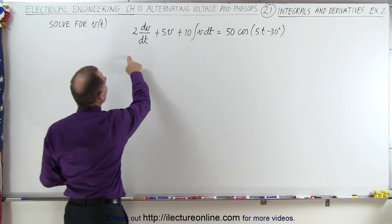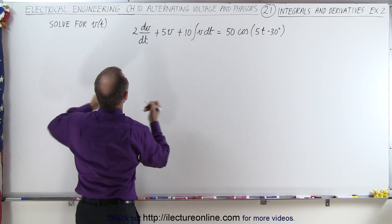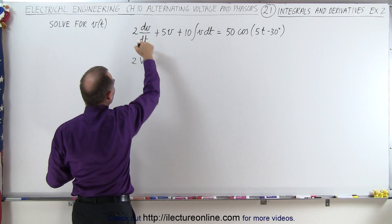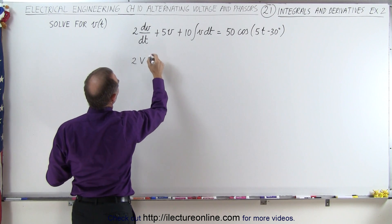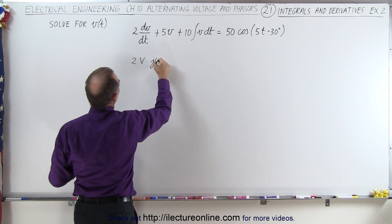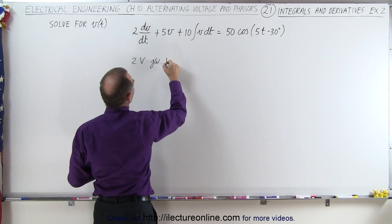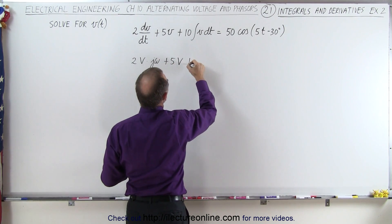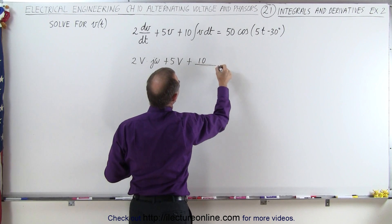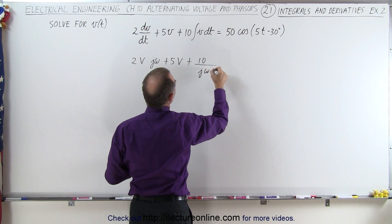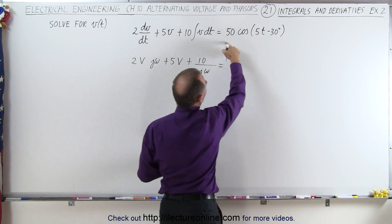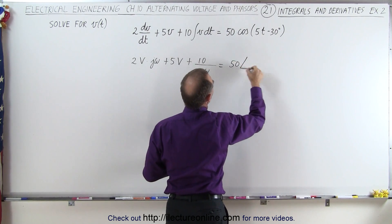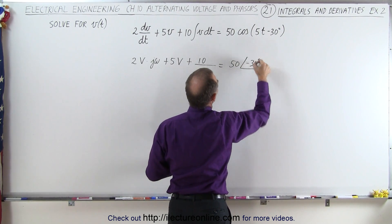So here we have 2 times dv/dt, which can be written as 2 times V, and since it's a derivative, we multiply this times j times omega. Here we have plus 5 times V, and here since we have an integral, that would be plus 10 divided by j times omega, and that is equal to — let's convert the right-hand side into the frequency domain — that would be the magnitude and the phase angle of minus 30 degrees.